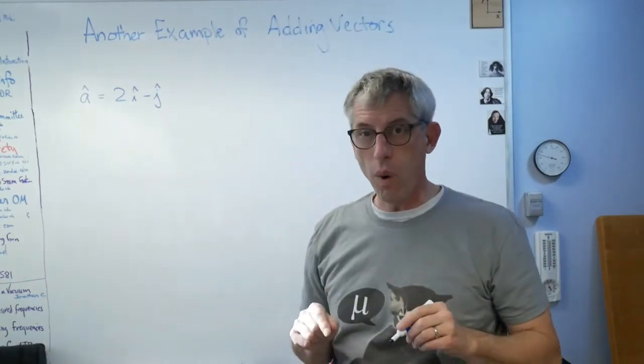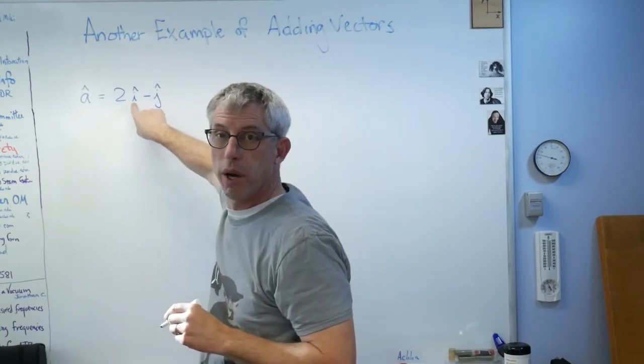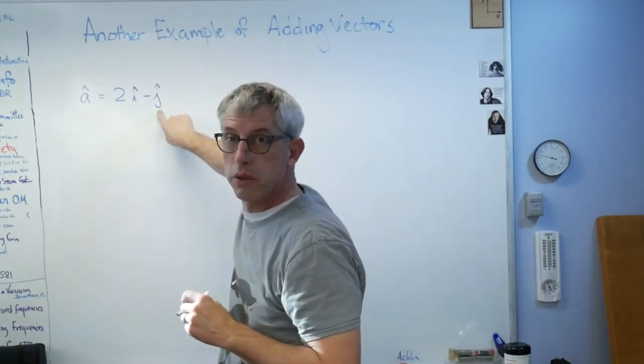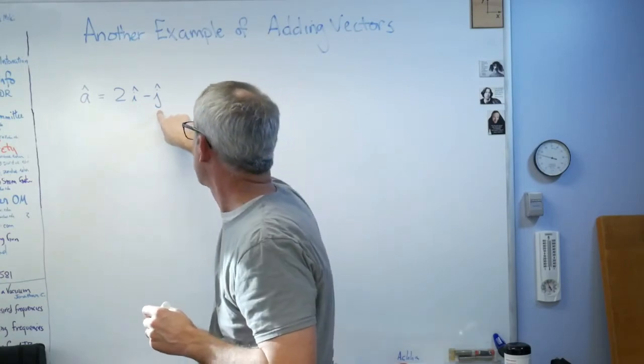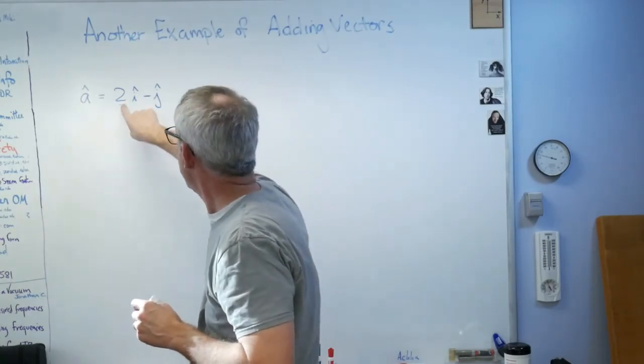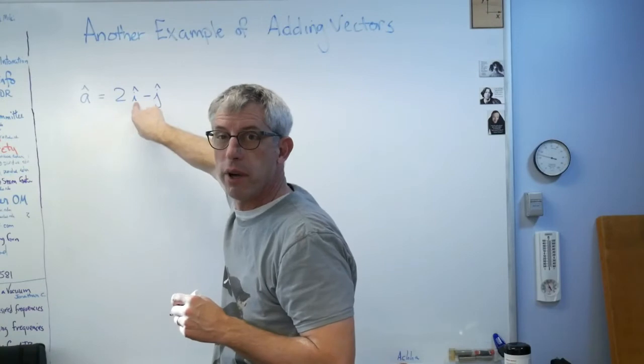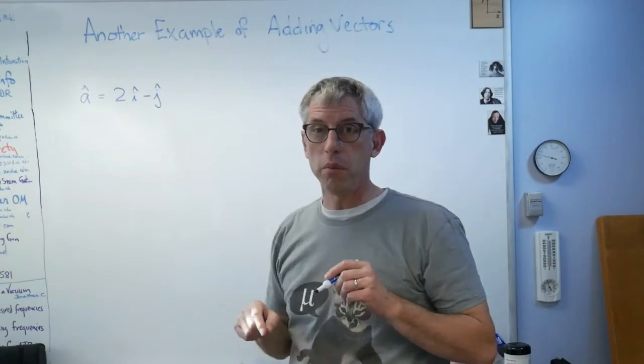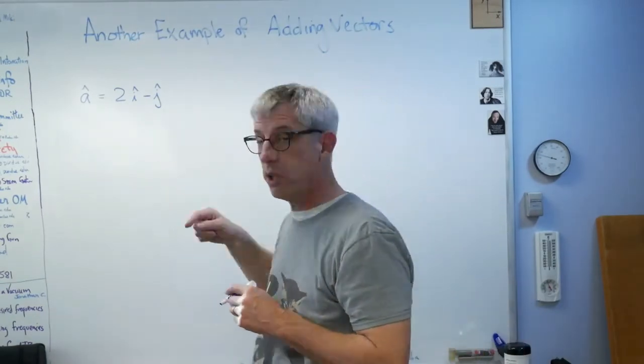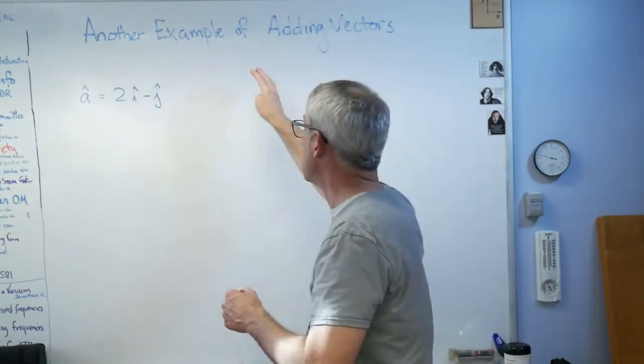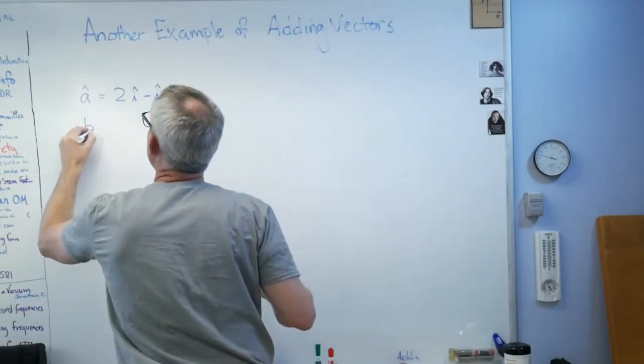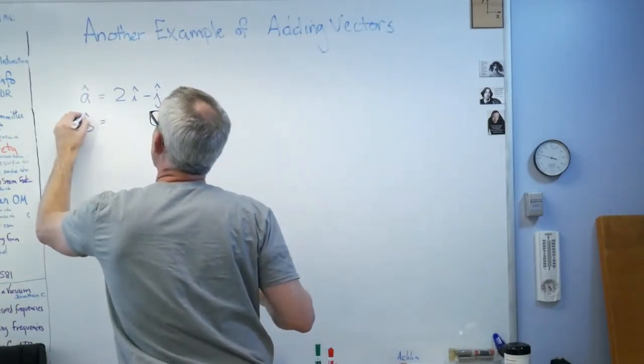See that little caret there? i and j are unit vectors. They have a length of 1 and a direction that is horizontal parallel to the x-axis and vertical parallel to the y-axis. That 2 is stretching that vector out, changing its magnitude but not its direction. Nowhere am I going to multiply two vectors.